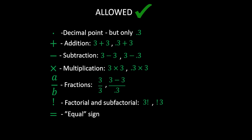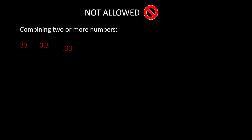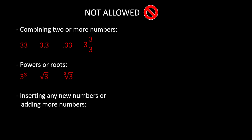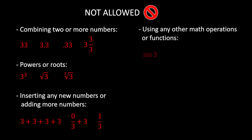To be even more clear, I will show you what is not allowed. You are not allowed to combine two or more numbers. For example, you cannot combine two 3s to get 33, 3.3, 0.33, or anything like that. Also, you cannot use powers or roots — so no 3 to the power of 3, no square root of 3, or any root of 3. You cannot insert any new number or add more numbers to the problem, so no additional 3s or any other number.